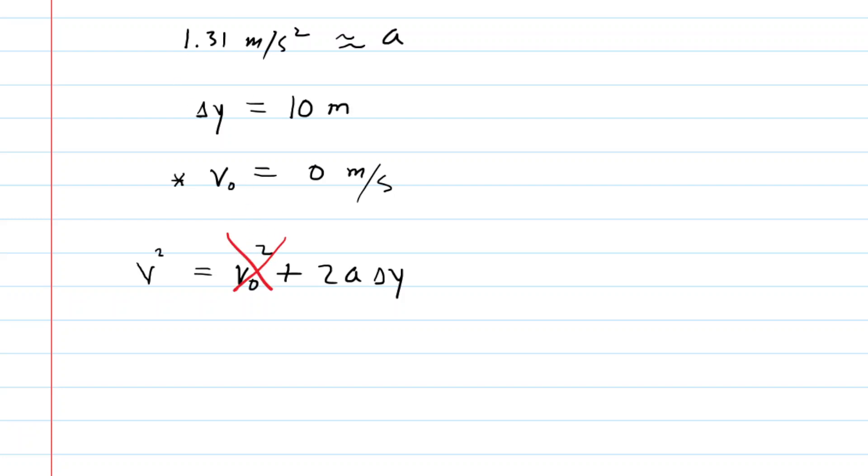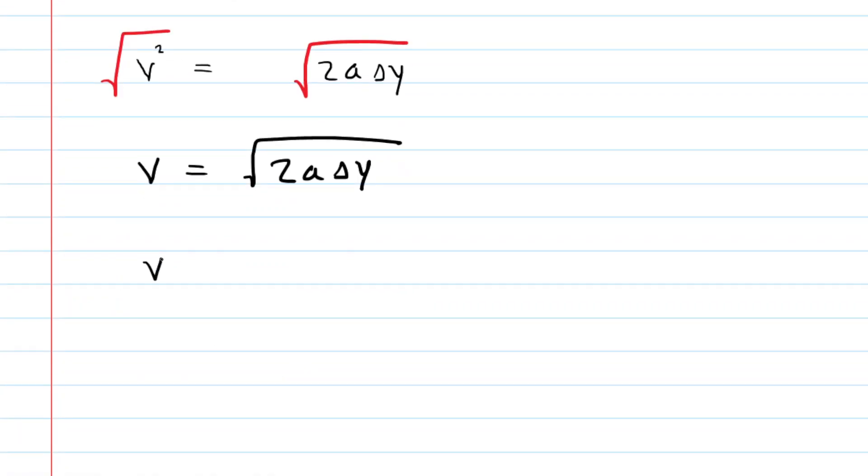And then we're going to be able to solve quite easily for that final speed. And we can do that by taking the square root of both sides of this equation. And then at this point, we would just plug in the known values. So the acceleration was determined a moment ago, about 1.31 meters per second squared. And then delta y was 10 meters.